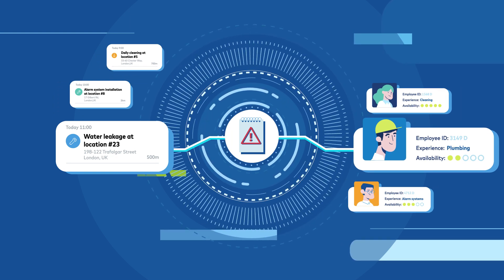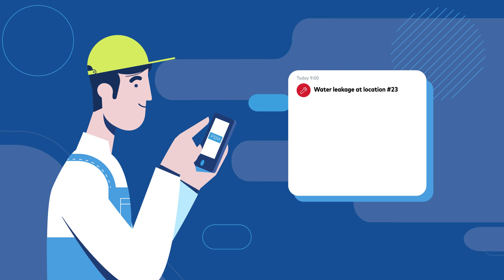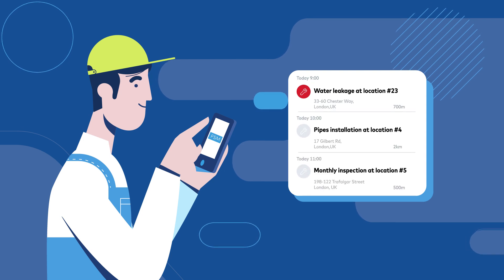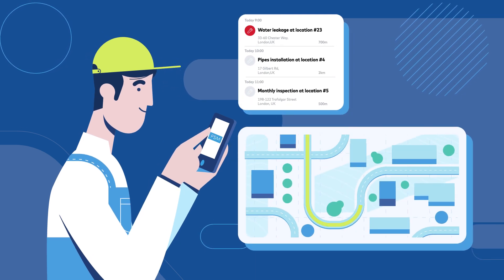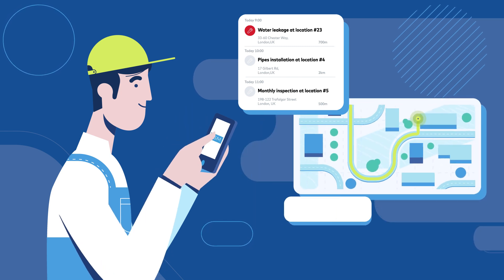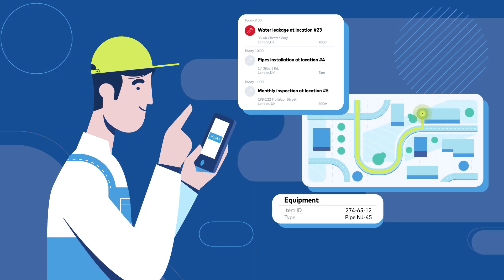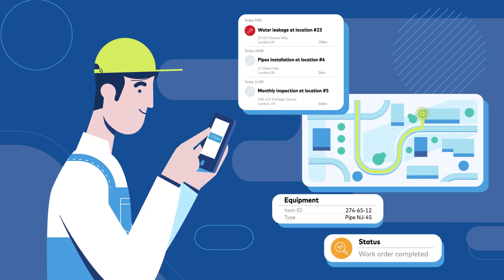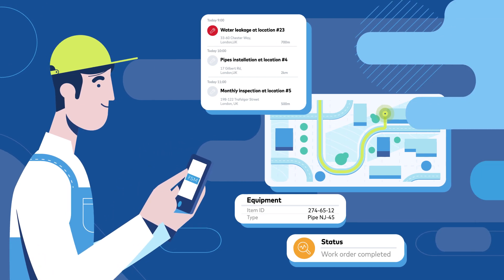Service workers will receive a list of tasks on the Comarch FSM mobile app, use it to reach a given location, fill in the used equipment and cost of their service, update the work order status, and move on to the next location.